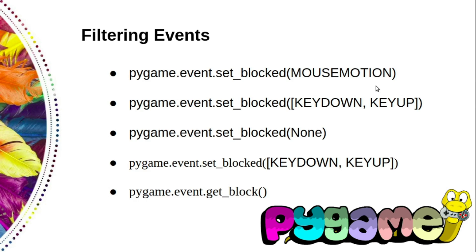Occasionally, you also need to suspend the handling of certain events. If you were to play a cutscene movie between levels, you would probably want to ignore input events until it is finished. The pygame event module has a number of functions to help you do just that.